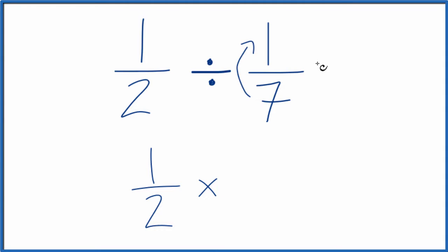That means we'll move the 7 up here to the numerator, the 1 goes down to the denominator. So we have 7 up top and then 1 on the bottom, and now we can just multiply.